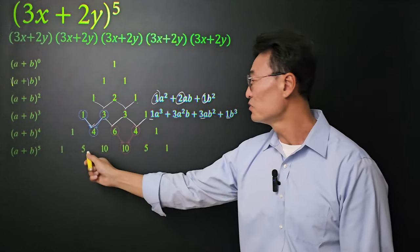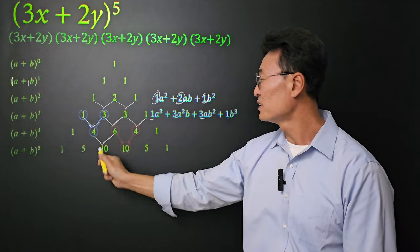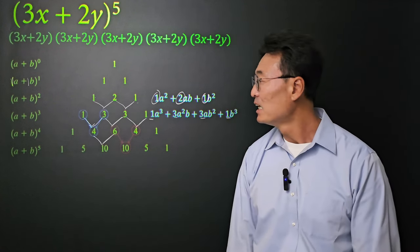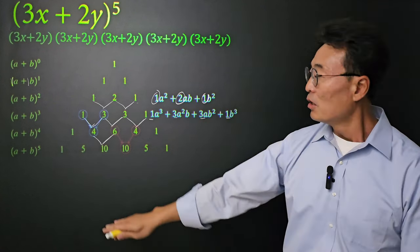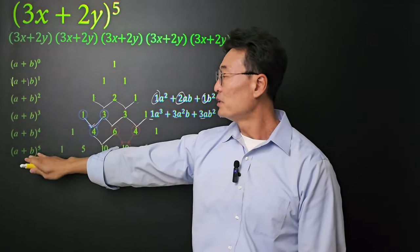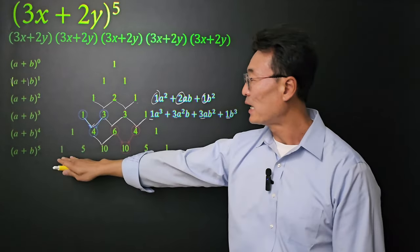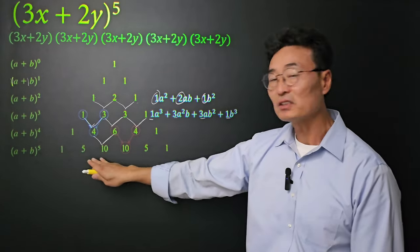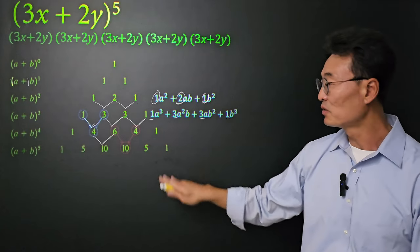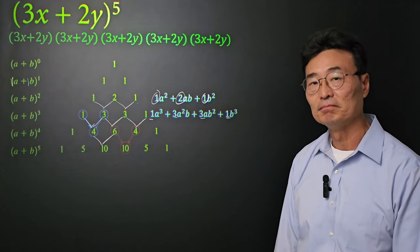The pattern continues. If we take the 4 and the 6, we get 10. To do (a + b) to the fifth power, we have the coefficients of the polynomials already written out.